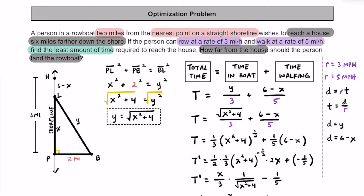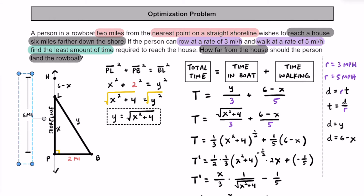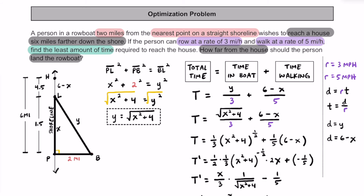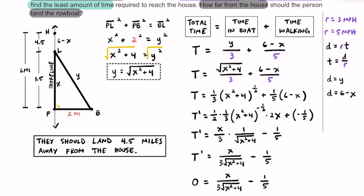Looking back at our picture, X is this distance from P to L in the triangle — it's definitely not drawn to proportion, but we know this distance is going to be 1.5 miles. So the distance from L to H must be 4.5 miles. So when the question is how far from the house should the person land the rowboat, the answer is that this person should land 4.5 miles away from the house. They'll travel the diagonal distance Y in the boat, land at point L, and walk 4.5 miles from L all the way to the house.